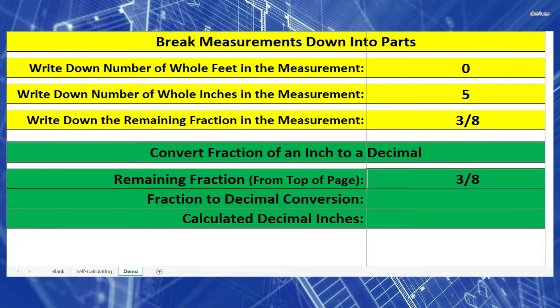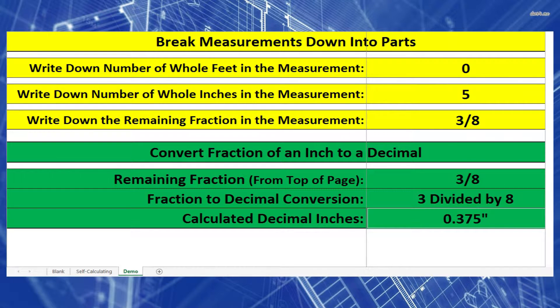Let's start by taking our fraction of an inch and turning it into decimal inches. Remember, to convert a fraction into decimal inches, we need to take the top number, which is three, and divide it by the bottom number, which is eight. Three divided by eight equals 0.375 inches.